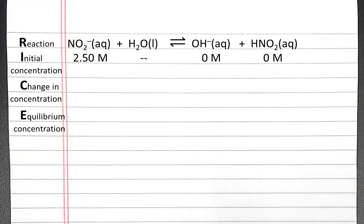Next, we can create a RICE table. Our reaction will go at the top. When we fill in our initial concentration, we'll use 2.5 molar for nitrite because the sodium nitrite completely dissociated into sodium ions and nitrite ions.